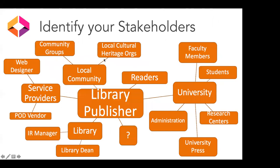Another exercise is to identify your stakeholders specifically—not just in a general sense. Who are they? What kind of influence do they have? What kind of interest do they have in open textbooks? Look at the university: faculty and students, research centers, a university press you could collaborate with for expertise and direction, marketing people in the library, community groups, and service providers like POD vendors and web developers. There are many different stakeholders beyond just these.